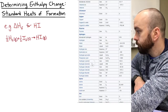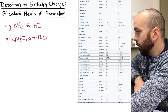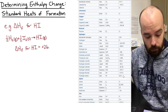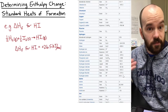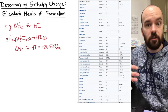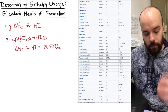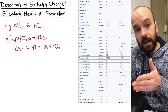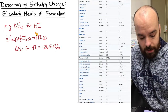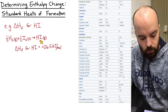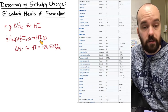Looking up hydrogen iodide on the Wikipedia table, I find it under hydrogen: the value is positive 26.5 kilojoules per mole. Notice our first example gave a negative value, so heats of formation can be positive or negative — negative for an exothermic formation, positive for an endothermic one, or zero as in the second example. Forming hydrogen iodide from its elements consumes 26.5 kJ/mol.